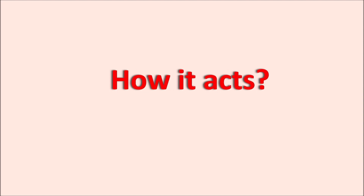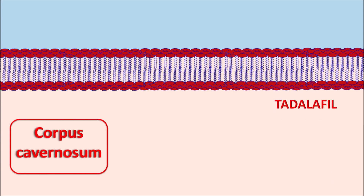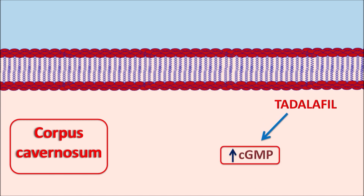Now let us see how this drug acts. One of the important targets of Tadalafil is the corpus cavernosum. At this location, Tadalafil mainly produces smooth muscle relaxation as well as vasodilation. The actions of Tadalafil are mainly attributed to an increase in the cyclic GMP levels within the corpus cavernosum. Cyclic GMP acts as an important secondary messenger which produces relaxation of the smooth muscle and vasodilation at the blood vessels supplying the corpus cavernosum. For this, one important mediator is required — that is nitric oxide.